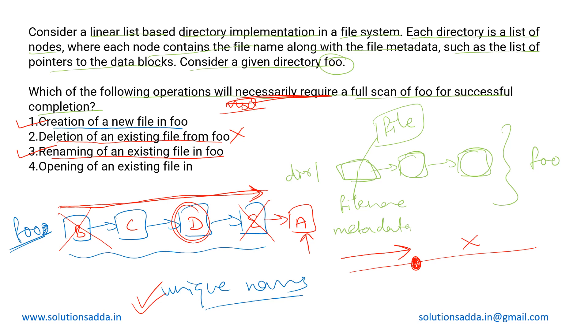Coming to the last one: opening an existing file in foo. Now again for this operation it does not have any constraint involved in it, just like the deletion operation. There is some file that we will be locating and as soon as we find it, all the files after that will not be traversed. We will traverse only up to a certain point until we find that particular file that has to be opened.